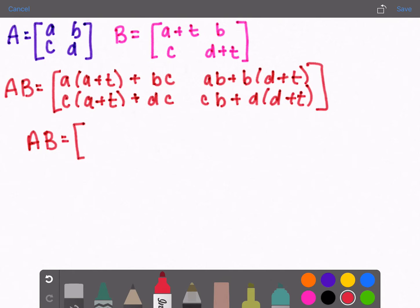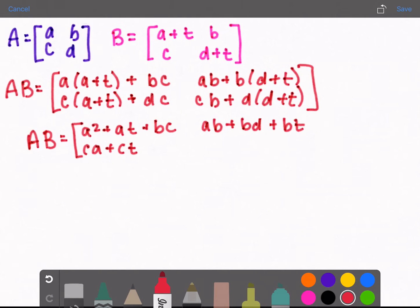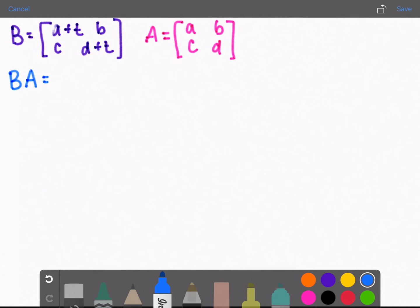So I will simplify AB and say that this is the same as A squared plus At plus BC, AB plus BD plus Bt, CA plus Ct plus DC, and CB plus D squared plus Dt.